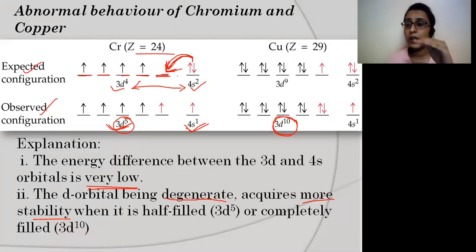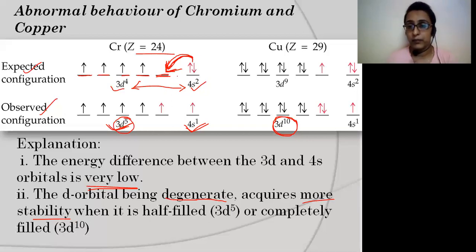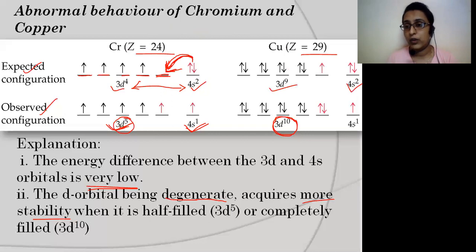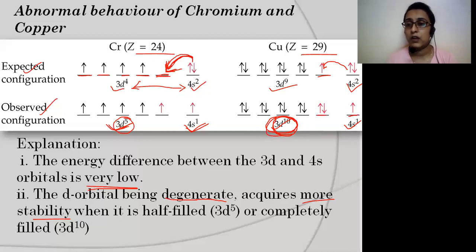In the case of copper (atomic number 29), we see the same thing. The expected configuration is 3D9 4S2, but the actual observed configuration is 3D10 4S1. Here also one electron from 4S is shifted to 3D, making the configuration completely filled and achieving extra stability. This is again because the energy difference between 4S and 3D is very low.